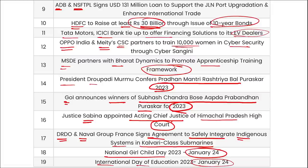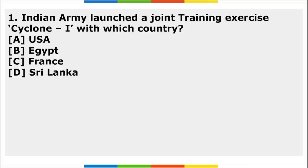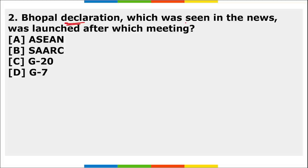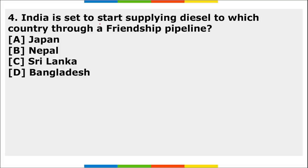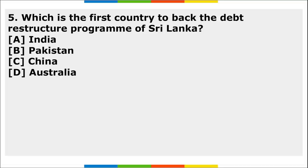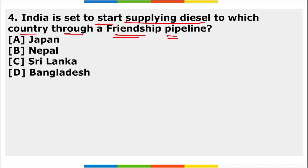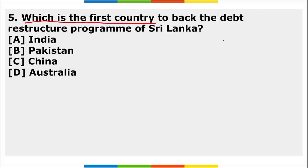Homework questions: 1. Indian Army launched joint training exercise Cyclone-1 with which country? 2. Bhopal Declaration, which was seen in the news, was launched after which meeting? 3. NASA awarded 425 million dollars to which company for the Sustainable Flight Demonstrator project? 4. India is set to start supplying diesel to which country through a friendship pipeline? 5. Which is the first country to back the debt restructuring program of Sri Lanka?